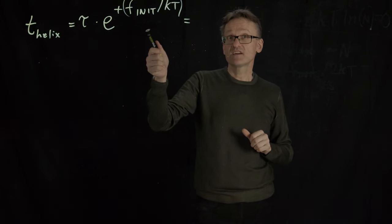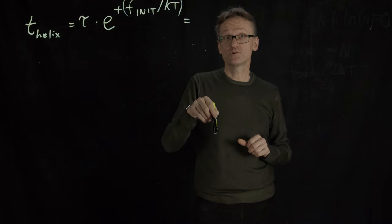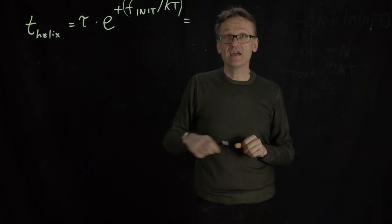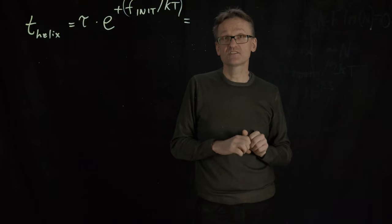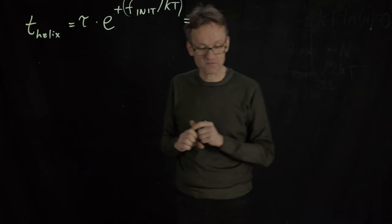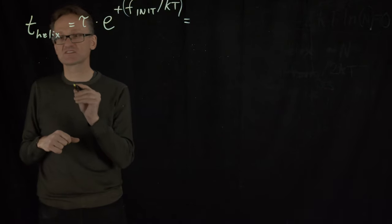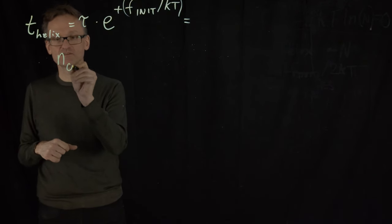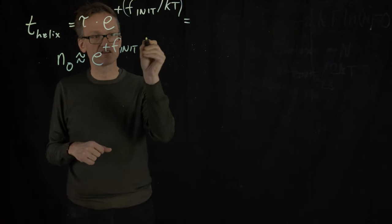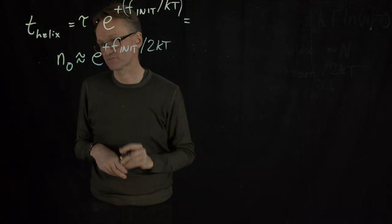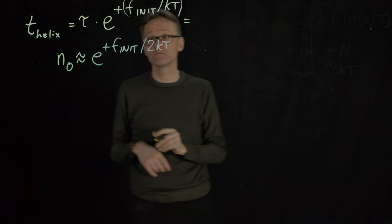But that is the energy that we would take to start it at one specific residue. If we have n_0 residues in the chain, there are n_0 different points where that can happen. From the last slide you saw that n_0 was roughly proportional to e raised to plus f_init divided by 2kT. So we should divide the time by that.